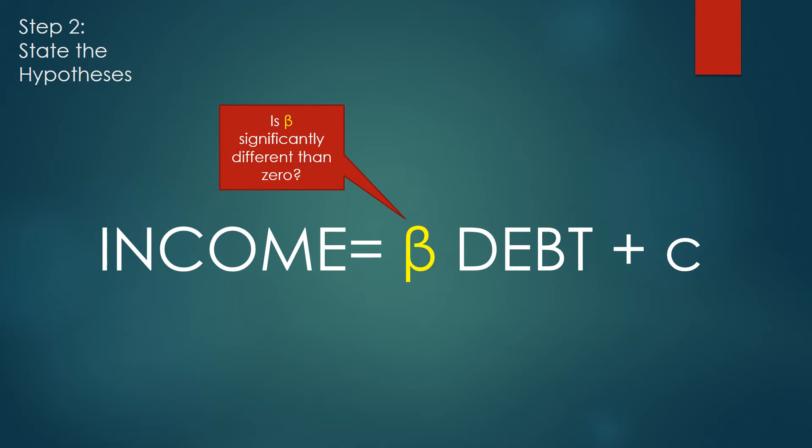We can figure this out by performing a linear regression and seeing if beta is statistically significant and non-zero. If it is, we know that we can model or estimate or predict income using debt.